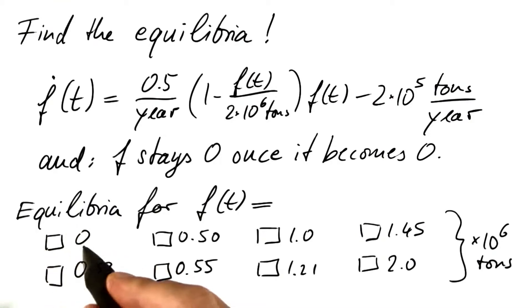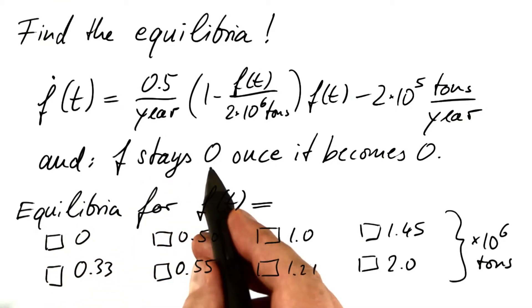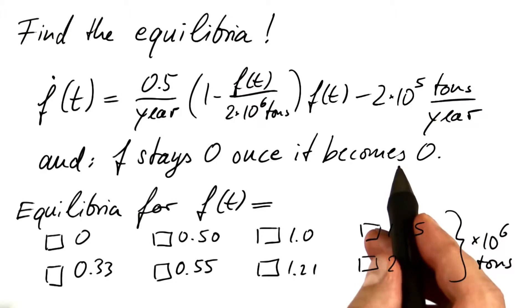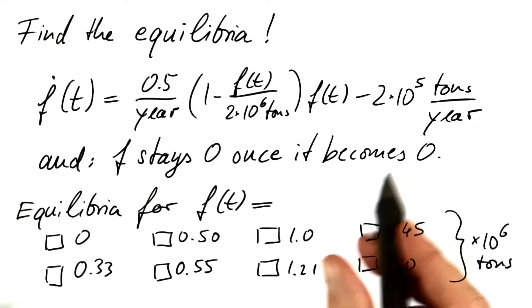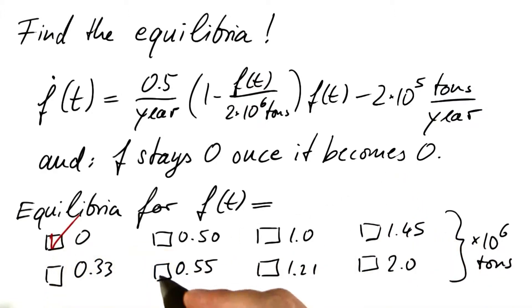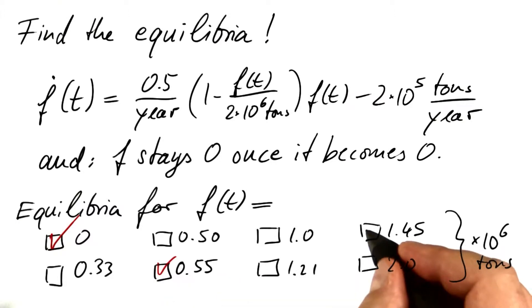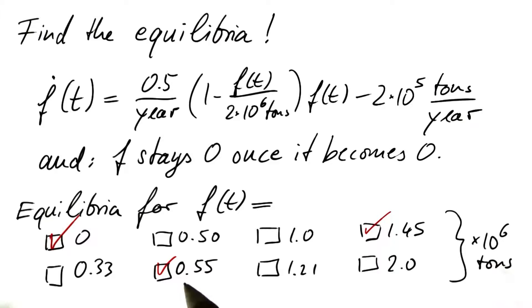Obviously, there's an equilibrium at zero. F stays zero once it becomes zero. This is nothing but an equilibrium. And there's two more. One is at 0.55 million tons and the other is at 1.45 million tons.